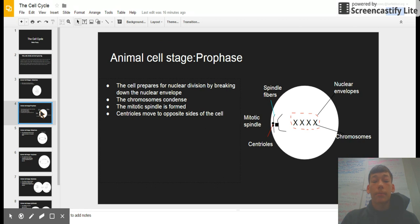In prophase, cells prepare for nuclear division by breaking down the nuclear envelope. The chromosomes condense. The mitotic spindle is formed. Centrioles move to opposite sides of the cell. This is a mitotic spindle. Centrioles are right there. Spindle fibers, chromosomes, and the nuclear envelope is that. It's so cool.